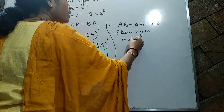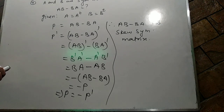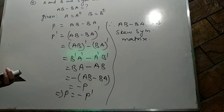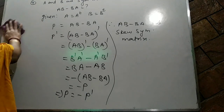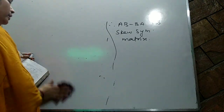Well done! AB minus BA is a skew-symmetric matrix. Write it down fast. Now let me take question number five, which is another very important question. Show that the matrix B transpose AB is symmetric or skew-symmetric according as A is symmetric or skew-symmetric.